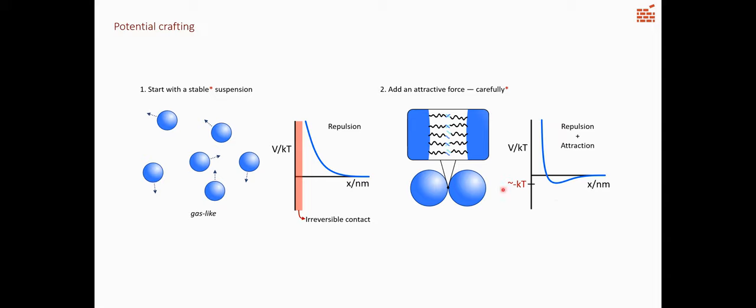We have to be careful because the potential well depth has to be relatively shallow on the order of KT. You want them to find each other but also break those bonds sometimes and move around each other. If that potential well is too deep, you just have stuck particles. If it's too shallow, nothing binds. It's a delicate balance of attraction and repulsion.